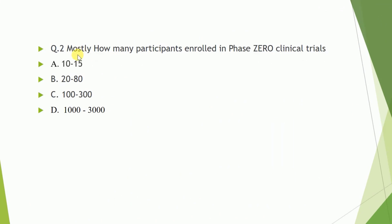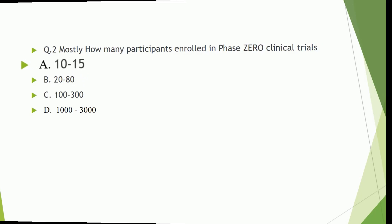Question number two: mostly how many participants enroll in phase zero clinical trials? I already discussed all participants in the phases. The correct answer is 10 to 15 persons.